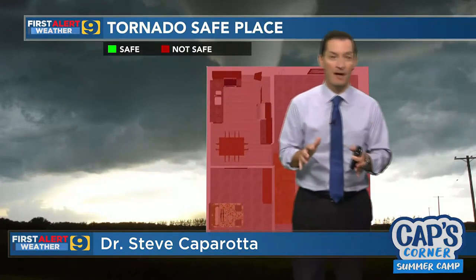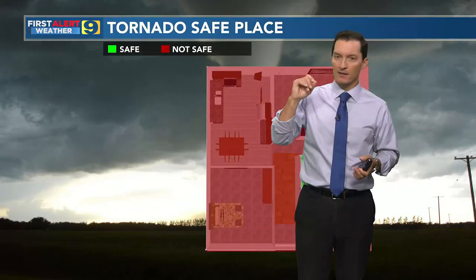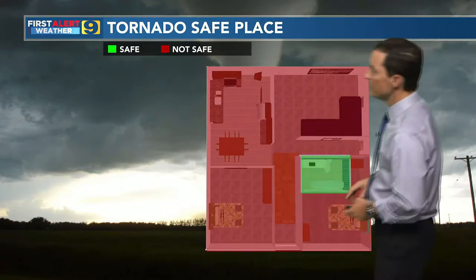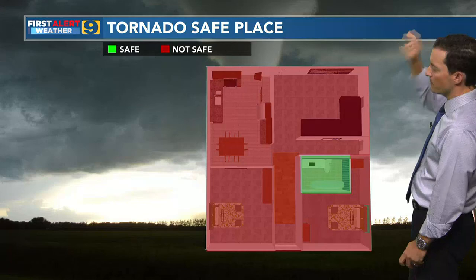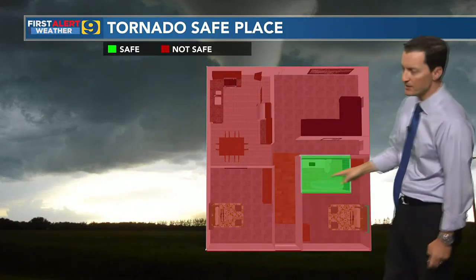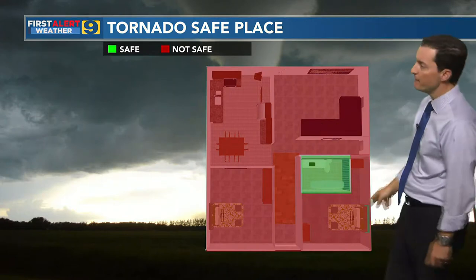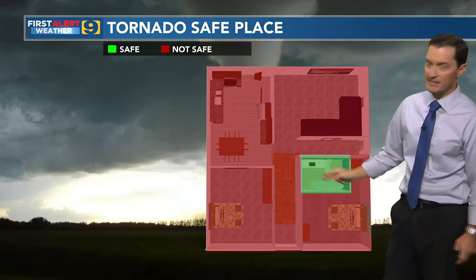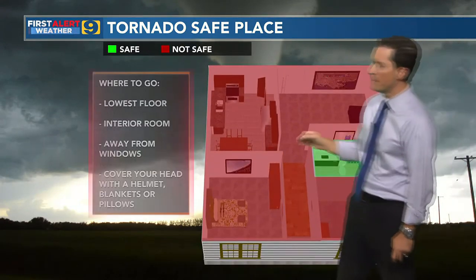Before we wrap up, we talked earlier about watches and warnings. Remember, once a warning is out, that's when we know we need to get to our tornado safe place. So where is a tornado safe place? Looking down at a house from above, this graphic shows red areas that are not very safe and a green area that is a good spot to be safe.